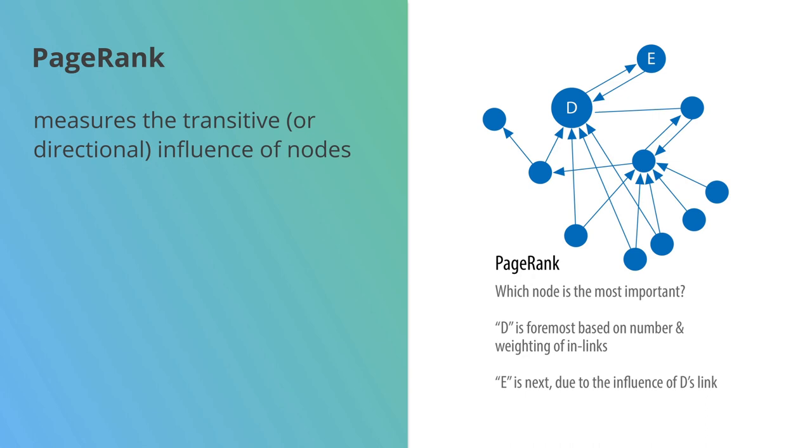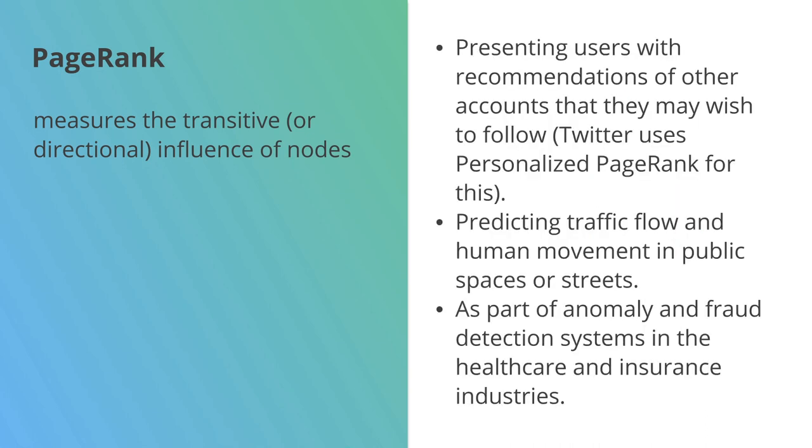This one originates from the Google search engine and it can be used for recommendations. Twitter has a variant of this called personalized PageRank for one of their recommendation systems, or it can be used in anomaly and fraud detection systems. And there are a couple of variants of this algorithm as well.